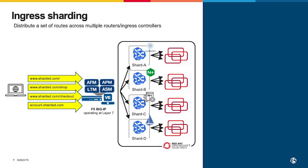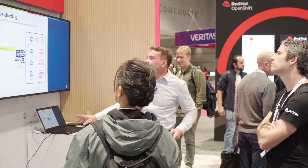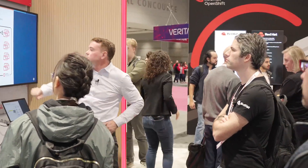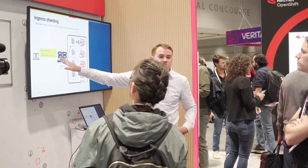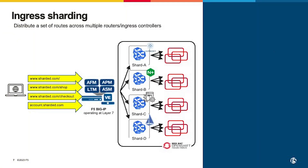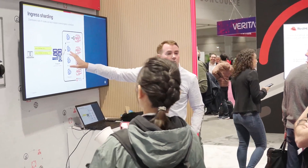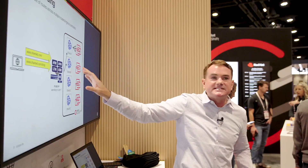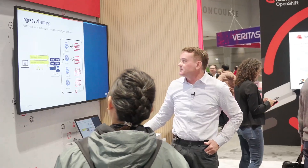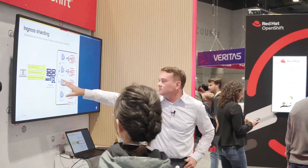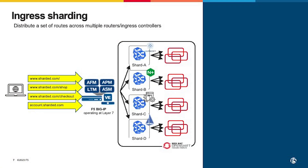This is where ingress sharding or route sharding comes in. For example, shard.com can go to pod A via HAProxy using an L7 route, shard-shop can go to pod B, and checkout can go to shard C — whether through HAProxy or Nginx. The Big IP simply sees these as endpoints and forwards traffic as long as those endpoints are available.